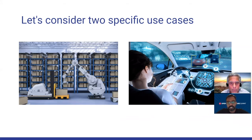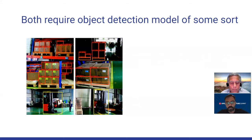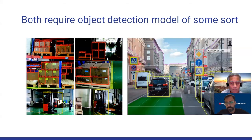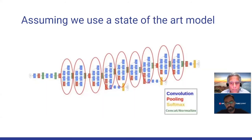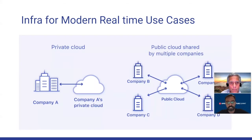For the next section of our talk, we focus on two use cases: warehouse automation and autonomous driving. Both require an object detection model. Warehouse detection needs a model to detect boxes, forklifts, and other objects, while autonomous driving needs to detect lanes, other cars, traffic signs, and pedestrians. Using state-of-the-art deep learning models, training still requires cloud resources with GPUs. But the evaluation part is different — and I'll hand it off to Prakash to talk about that.